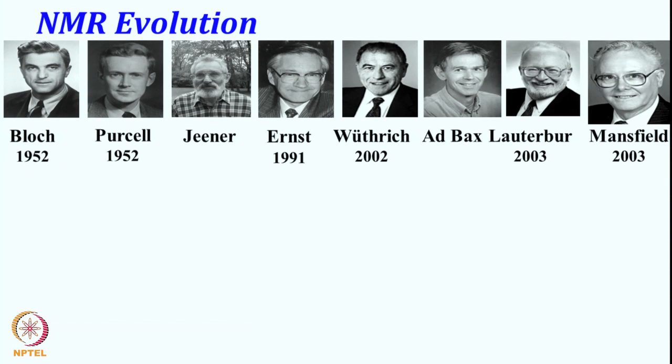If you look at the development of NMR, or what we call NMR evolution — Bloch and Purcell from the USA discovered the phenomena of nuclear magnetic moment and they got the Nobel Prize in 1952. Jean Jeener actually proposed the idea of two-dimensional NMR, which was implemented by Professor Richard Ernst.